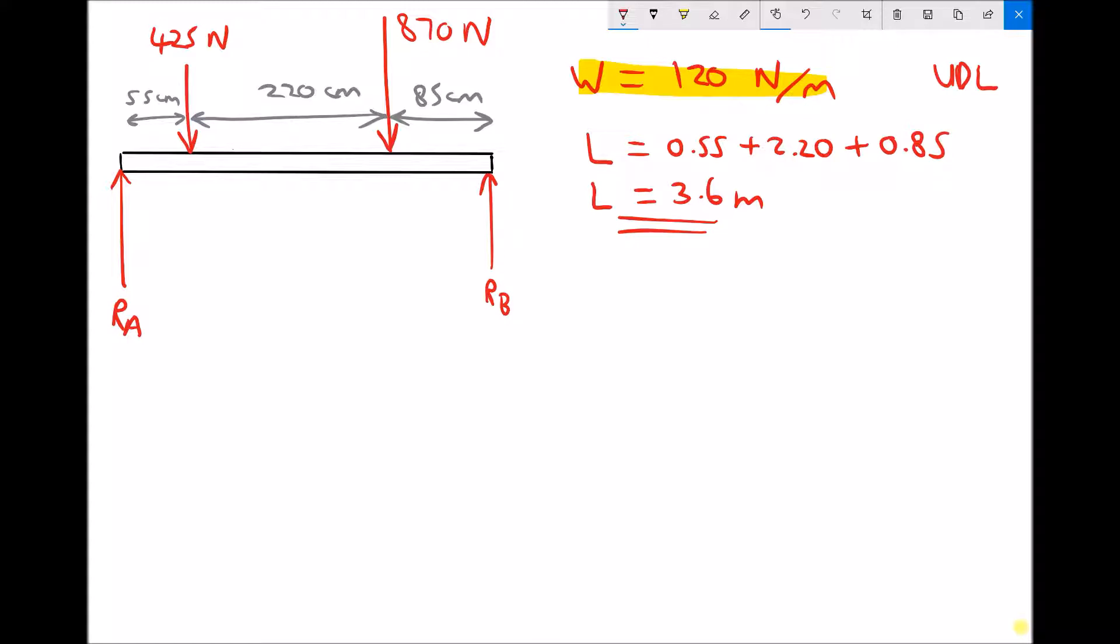So we've already said that each one meter section of this beam weighs 120 newtons, but the beam is 3.6 meters long. Therefore, the total weight of this beam, because it's 3.6 meters long, is going to be the weight per meter, which is 120 newtons, times the overall length, which is 3.6 meters, giving us a total weight of this beam of 432 newtons.